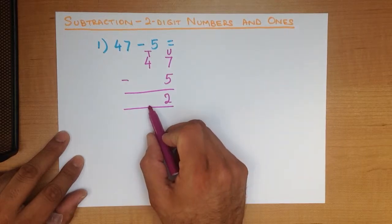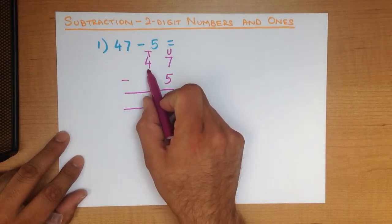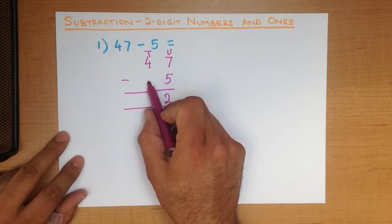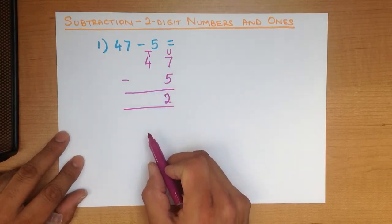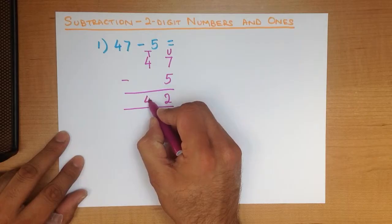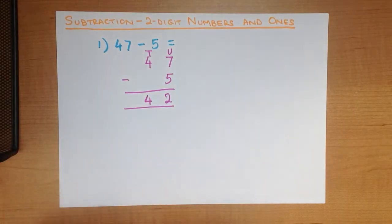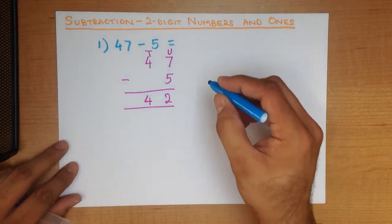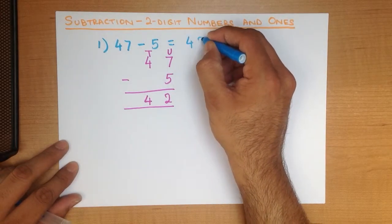Now we do the tens. What is 4 minus 0? There's nothing there. 4 minus 0 is 4. And that is our answer. 47 minus 5 is 42.